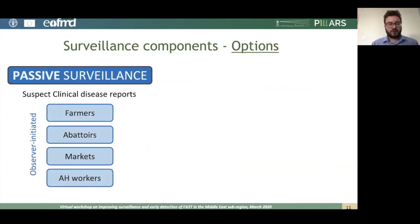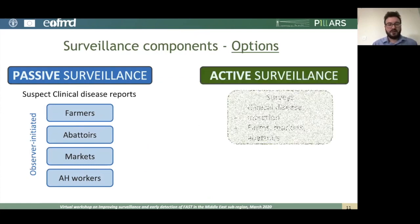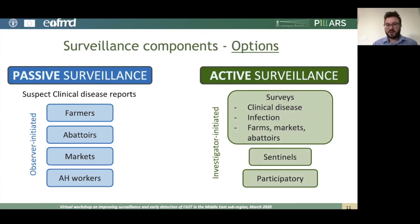The options for surveillance types include: passive surveillance, which covers suspected clinical disease reports from observers such as farmers, abattoirs, markets, or vets; and active surveillance, which may involve surveys for clinical disease, surveys for infection through serological surveys, surveys of farms, markets, or abattoirs, sentinel surveillance, and participatory surveillance — both of which I'll describe shortly.